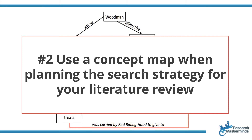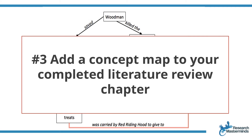One of those rabbit holes where you find an article, get suggested a few related articles, then find another few related articles which are related to those, and after four hours you can't even remember what your actual focus was. To avoid this situation, draw your concept map first. You can use the concept map you drew when you brainstormed your research topic — that will give you guidance in terms of which keywords to search for. Planning your search strategy before you jump in will ensure that you remain on the well-lit path.